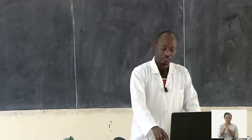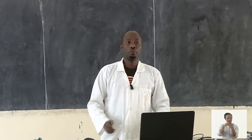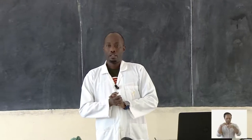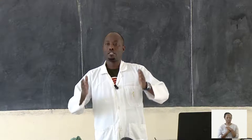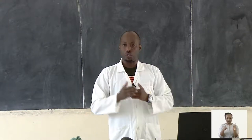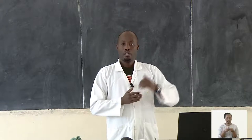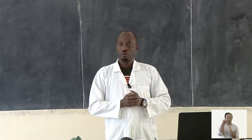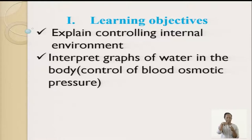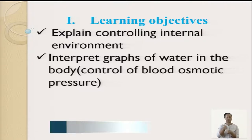The learning objectives of today: we are going to be able to explain the control of the internal environment. What are the internal variables that have to be controlled? We can have examples such as temperature, pH, and glucose level in the blood. All those internal variables need to be balanced.